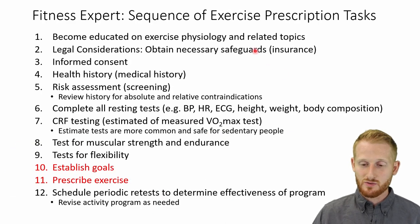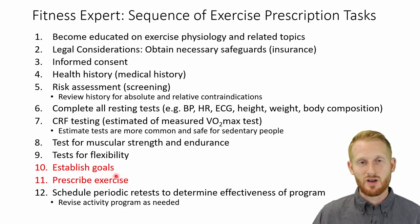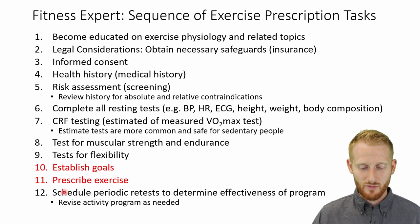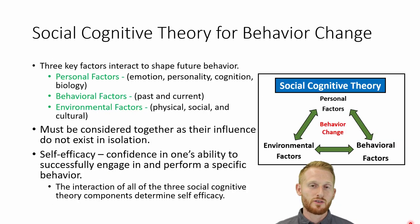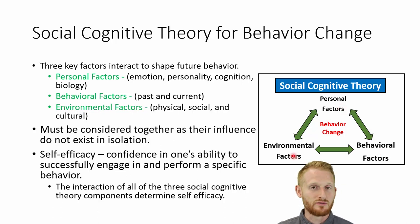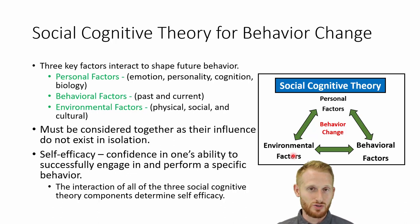When looking at the sequences for exercise prescription tasks, we're looking at numbers 10 and 11. You're going to use behavioral change models and theories to help establish goals and prescribe exercise for your clients, and also to keep your clients going over time. The first theory is the social cognitive theory for behavioral change. It's the idea that your personal factors, behaviors, and environment all work together to determine your ability to successfully change your behavior.